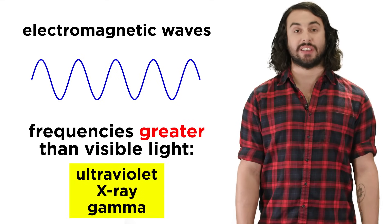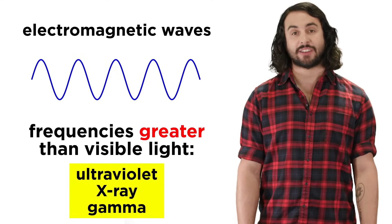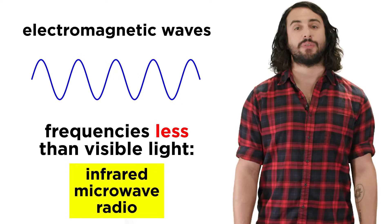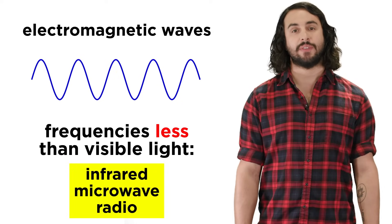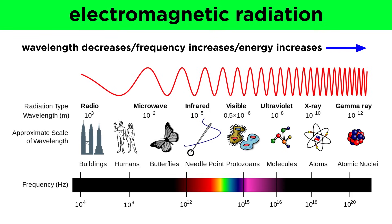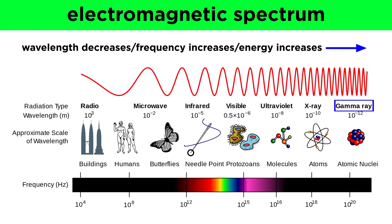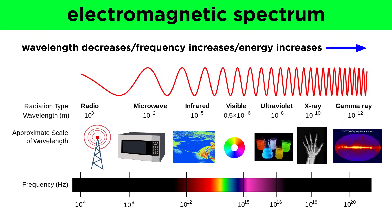Frequencies greater than this will exist as UV radiation, X-rays, or gamma rays, and frequencies less than this qualify as infrared radiation, microwaves, or radio waves. All of these phenomena are collectively referred to as electromagnetic radiation, and they can be found on the electromagnetic spectrum. Here we can see all the wavelengths and frequencies ranging from radio waves to gamma rays, and we have found some technological use for all of these in modern society.